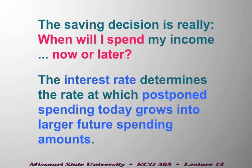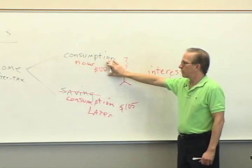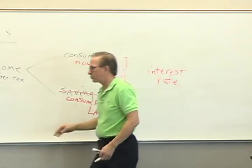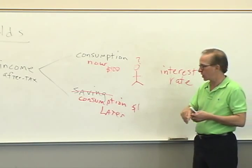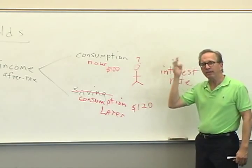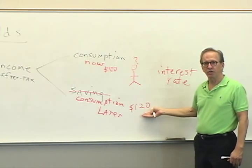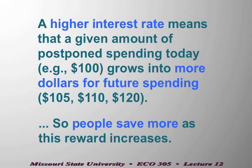The reason the interest rate is important is this: if we set aside $100 right now and think about spending it just one year later, if the interest rate is 5%, then a year from now we'd have $105 to spend. A lot of people will go ahead and spend their money today rather than later. But when that interest rate changes — let's say it's 20% — now we have a choice: spend $100 today, or wait a year and spend $120. The higher the interest rate, the higher the reward for postponing your spending today and spending later instead.